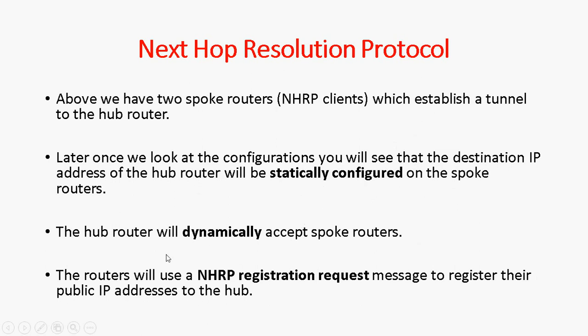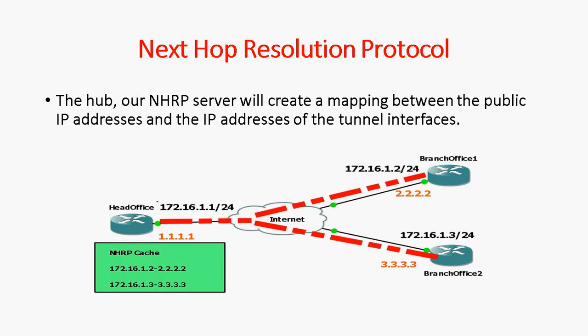The hub router will dynamically accept the spoke routers. Each router uses an NHRP registration request message to register its public IP address to the hub, since the hub is considered the NHRP server and all spoke routers are NHRP clients. The hub, as the NHRP server, will create a mapping between the public IP address and the IP address of the tunnel interface.